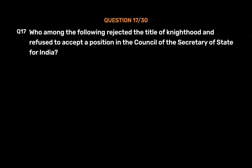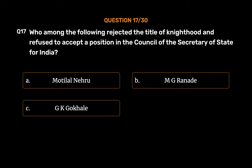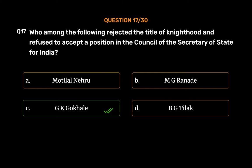Question No. 17. Who among the following rejected the title of knighthood and refused to accept a position in the council of the Secretary of State for India? Option A, Moti Lal Nehru; Option B, M.G. Ranade; Option C, G.K. Gokhale; Option D, B.G. Tilak. The correct answer is Option C, G.K. Gokhale.